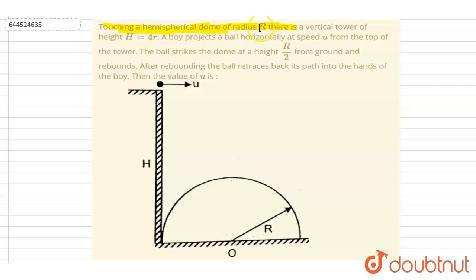Of radius R, there is a vertical tower of height 4R. A boy projects a ball horizontally with speed u from a tower. The ball strikes the dome at a height R by 2 from the ground and rebounds. After rebounding, the ball retraces back its path into the hand of the boy. Then find the value of u.